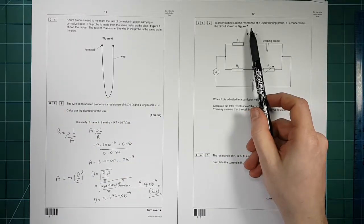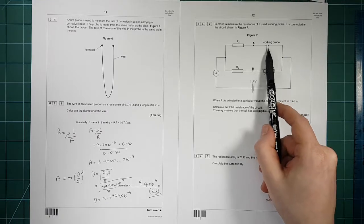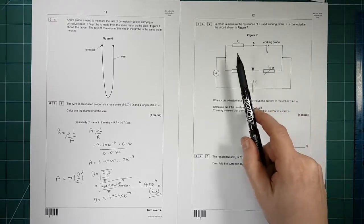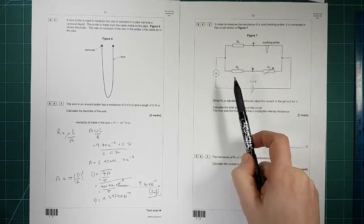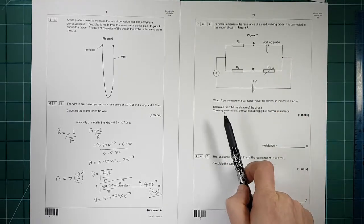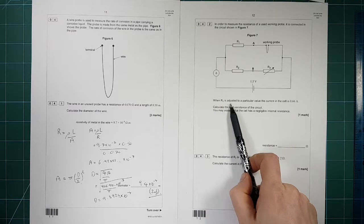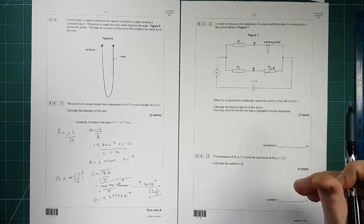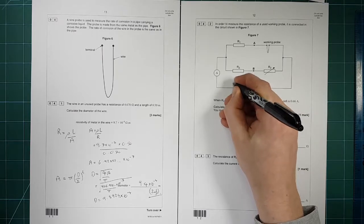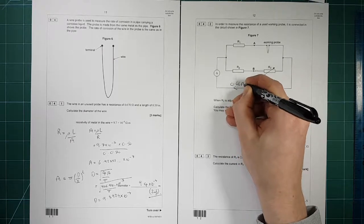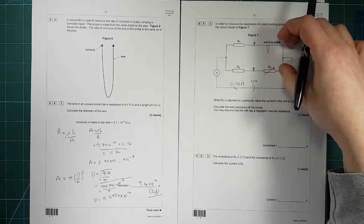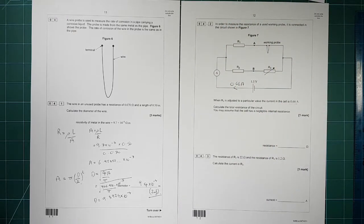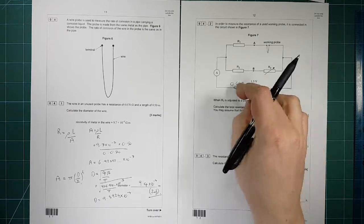In order to measure the resistance of a working probe, we connect it to this circuit here. This is a bridge circuit, it's a very common circuit. You may get asked something similar to this. When R is adjusted to a particular value, the current in the cell is 0.66 amps. So 0.66 amps is flowing all the way through that section there, and then it splits up down there, and comes back there. Calculate the total resistance of the circuit.